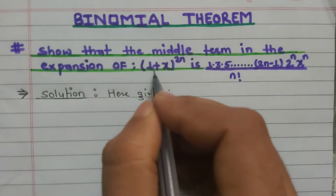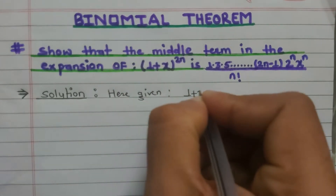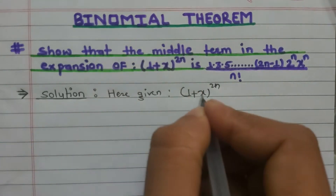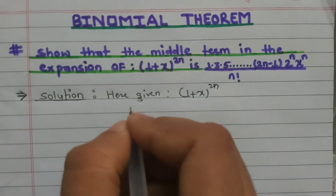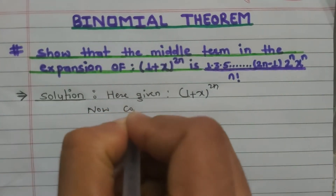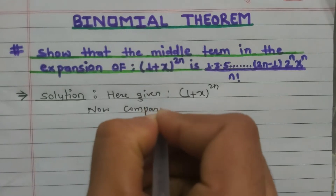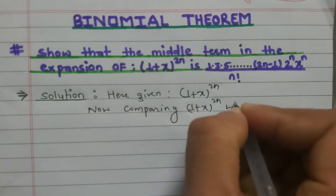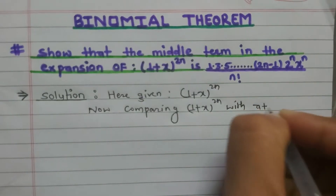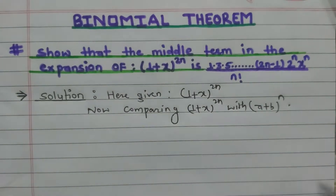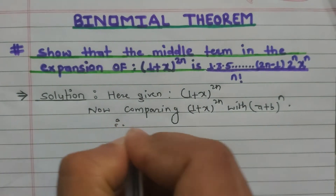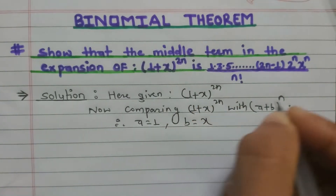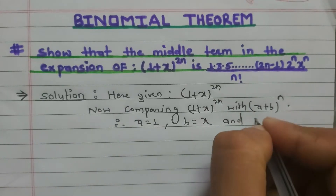The given data is (1+x)^(2n). Now I am going to compare this with (a+b)^n. Comparing (1+x)^(2n) with (a+b)^n, we get: a = 1, b = x, and n = 2n.